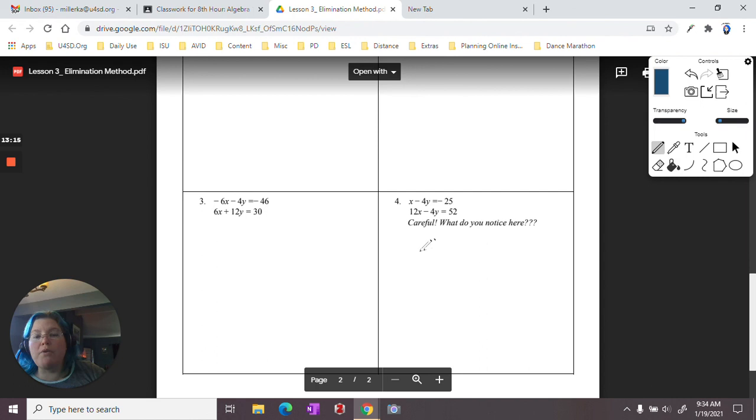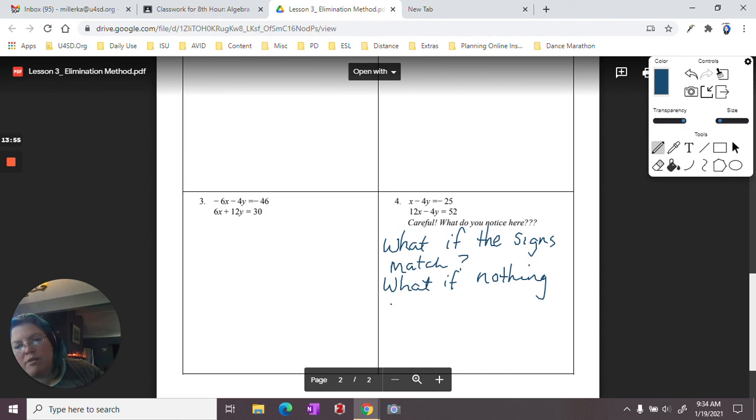So we have x minus 4y equals negative 25 and 12x minus 4y equals 52. What do you notice? We have negative 4y and negative 4y. They're not opposite signs. So if I add those together, they won't eliminate. So here's the question I want you to ask and see if you can come up with a strategy. What if the signs match? What if nothing cancels? Or eliminates? Be thinking about that as we move into our next lesson.